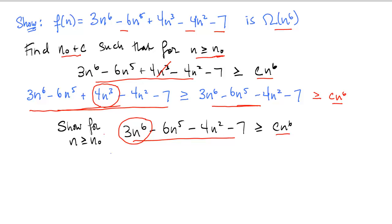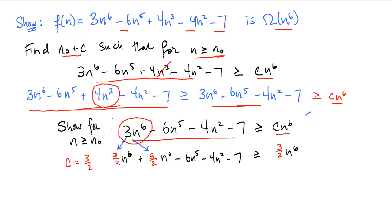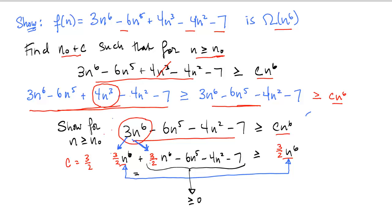We need to make this intuition mathematically concrete, and there are many ways to pick c and n₀. We choose c = 3/2, which is half the coefficient of the leading term. We think of splitting the leading term into two parts each with coefficient 3/2. The first part equals the lower bound we want to show, so it remains to prove that the second 3/2·n⁶ term together with all lower-order terms is ≥ 0.